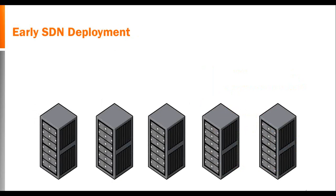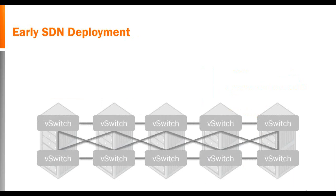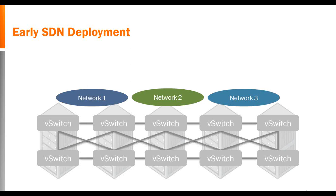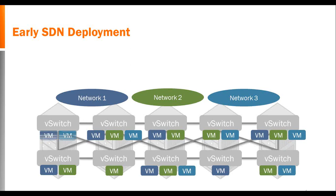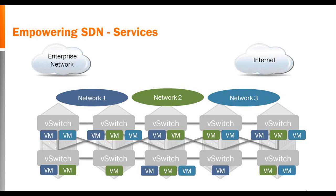Early SDN deployments typically show V-switches running on a hypervisor — either Open vSwitch or proprietary switching solutions — controlled through a central controller, connecting Layer 2 segments using VLANs or emerging Layer 2 encapsulation technologies. The controller allows connection of virtual machines to Layer 2 networks in a flexible way, allowing fully segmented, isolated networks to share hardware. What's not addressed is how to connect these new networks to today's networks or to each other — how to go between these islands of SDN and connect seamlessly with legacy networks.